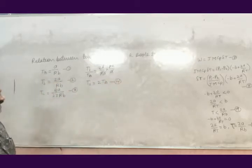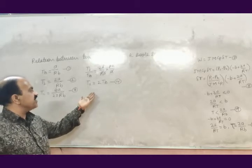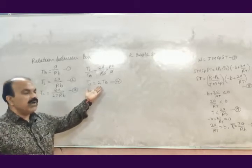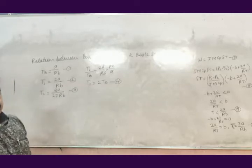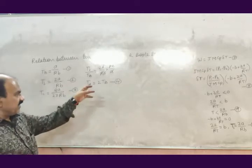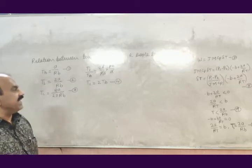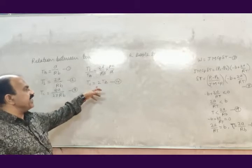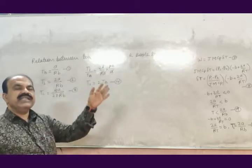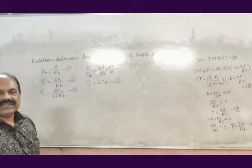This means that the temperature of inversion of any gas is always double the boil temperature of that gas. From equation 4 we conclude that the temperature of inversion of any gas is 2 times the boil temperature of any gas.